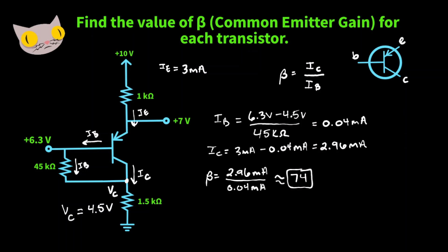So we just went over three examples of finding the common emitter gain for transistor circuits. I hope you enjoyed the video, and thank you for watching.